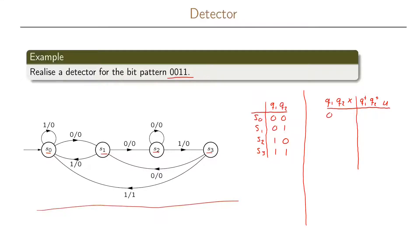We can enumerate all the different possible inputs to our circuit, which gives eight possible input combinations. For each of these input combinations we need to define what is Q1-plus, what is Q2-plus, and what is U.